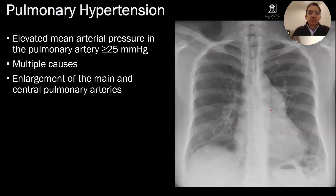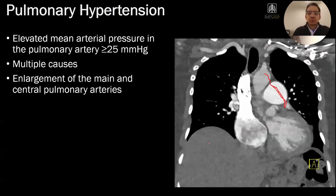Here's a patient who has pulmonary hypertension. Because of that, they have enlargement of their main pulmonary artery, so their AP window is very shallow. Their pulmonary artery is dilated. Here it is on CT — in this patient, the pulmonary artery is actually bigger than the aorta. So that's pulmonary hypertension.